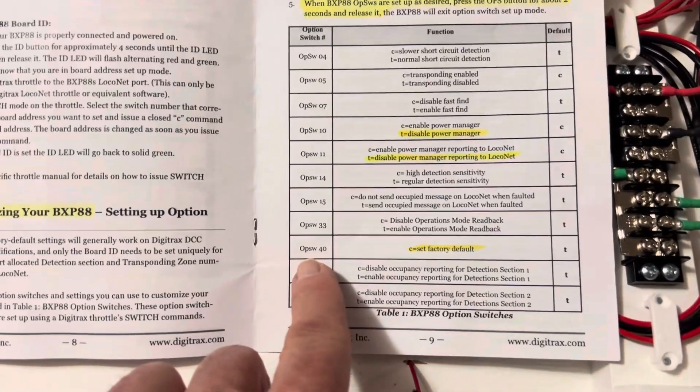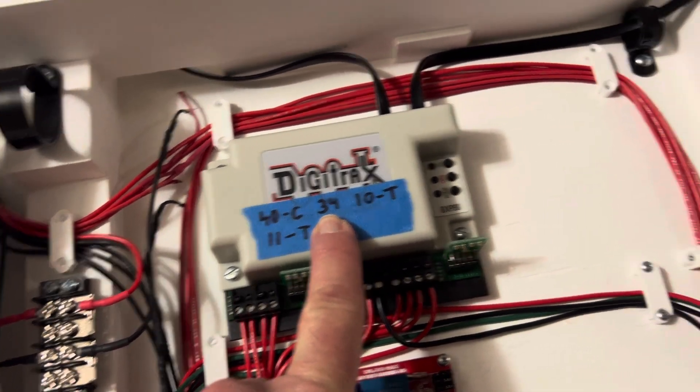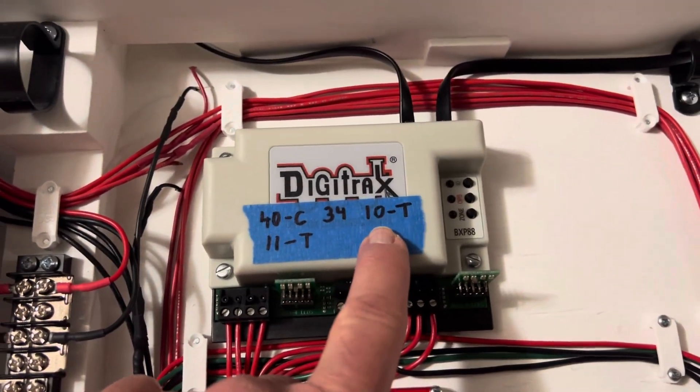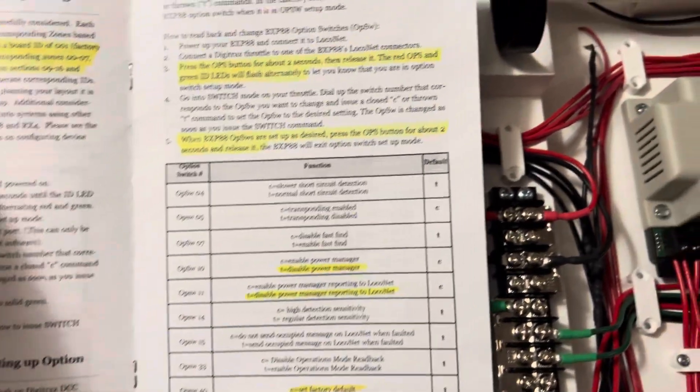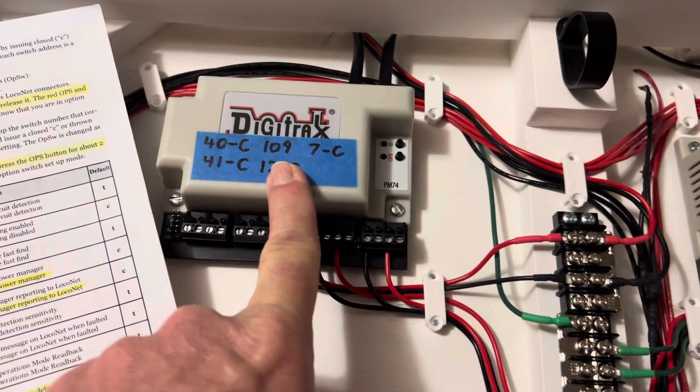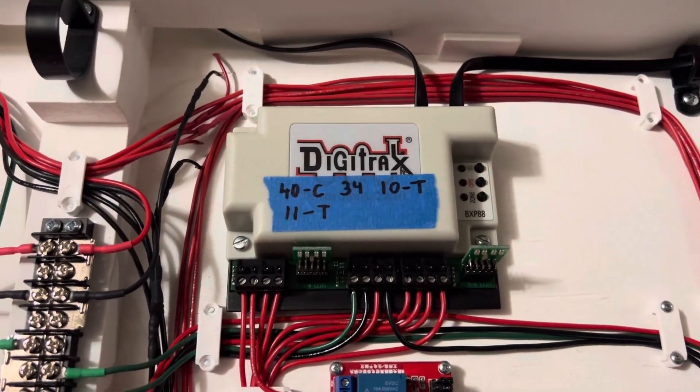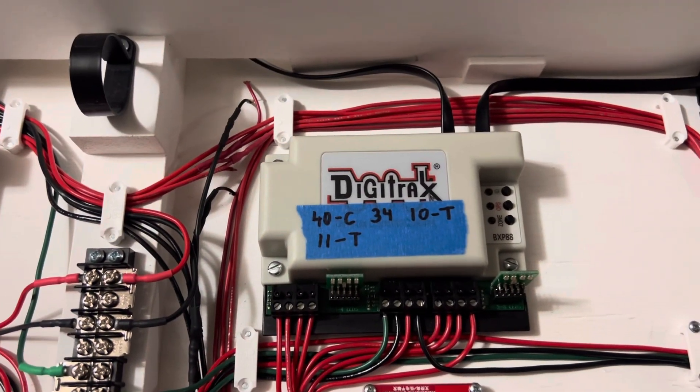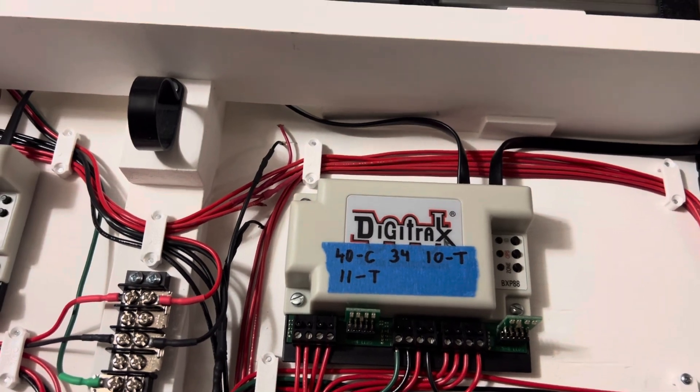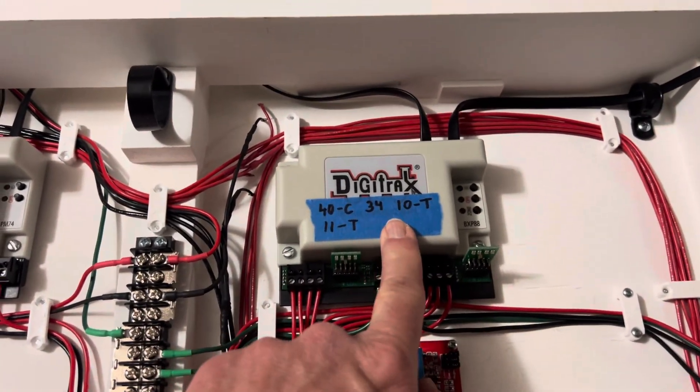40C was the reset. There is the address. So this one's 34 and this one's 33. 10T basically disabled the power management because I want this guy to take care of the power management, not this guy.